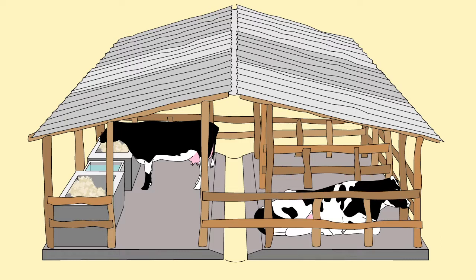Ensure flooring is appropriate to the number of animals and conditions. Make sure there are no wet or muddy patches for people or cows to walk through, and ensure broken concrete and damp areas are addressed. The shed should be easy to keep clean and dry — if it's not easy, then it will not get done.